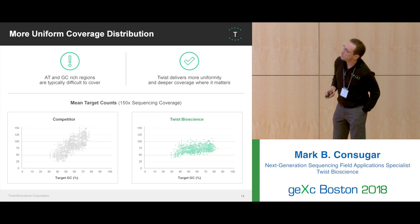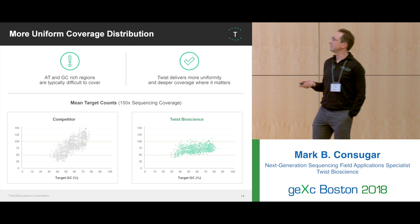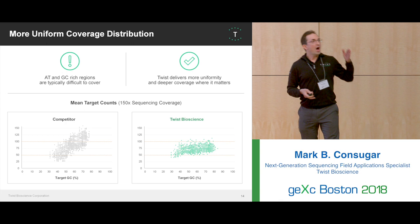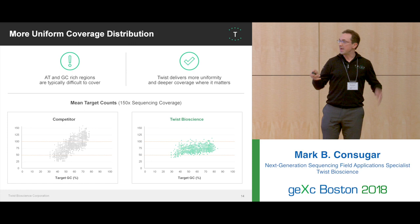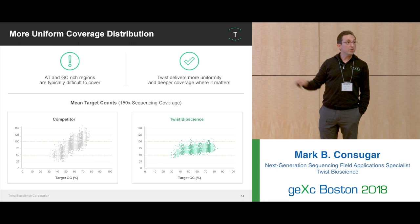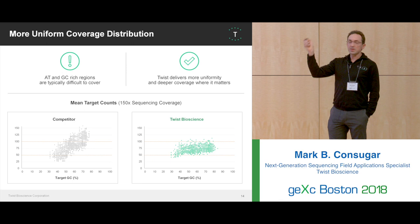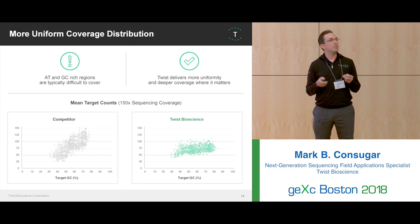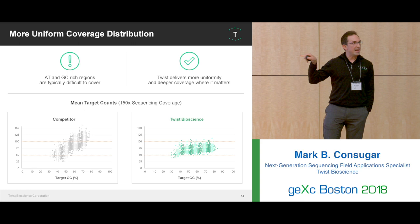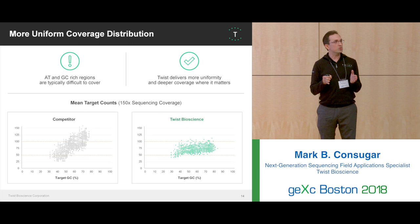For more uniform coverage distribution, AT-rich and GC-rich regions are typically difficult to cover. With a competitor's approach on the same design, you see a positive slope from low to high GC — meaning probes are not equivalently represented. Twist, on the other hand, shows a flat, near-zero slope distribution where reads align in a very tight distribution across the design regardless of GC content.